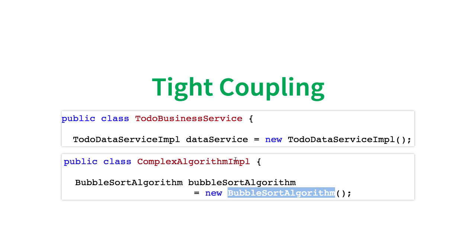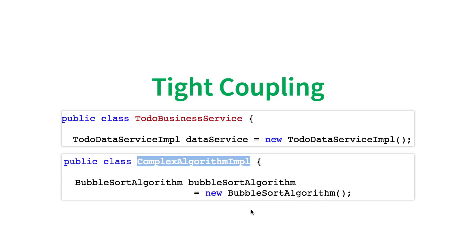Why is it called tight coupling? Imagine what you would need to do if you needed to change from bubble sort to quick sort. You would need to change the code inside ComplexAlgorithmImpl. So ComplexAlgorithmImpl is tightly coupled to the specific sorting algorithm.